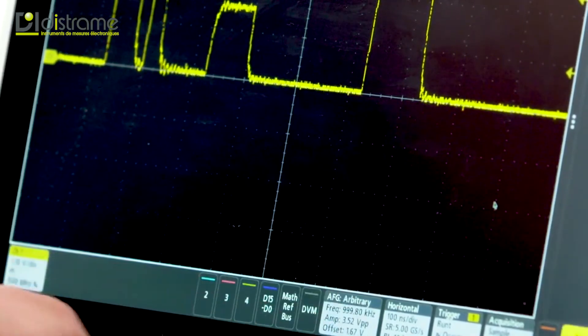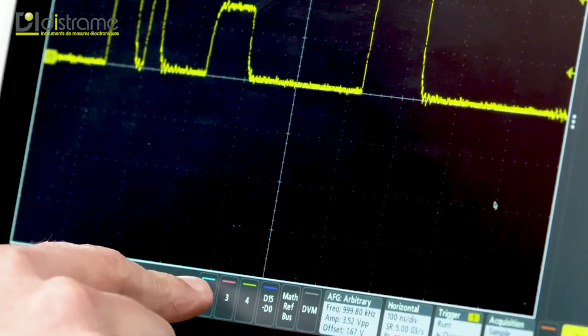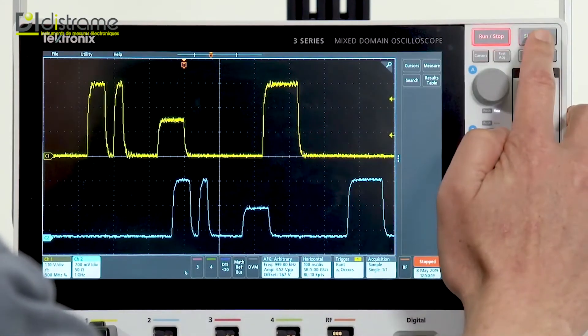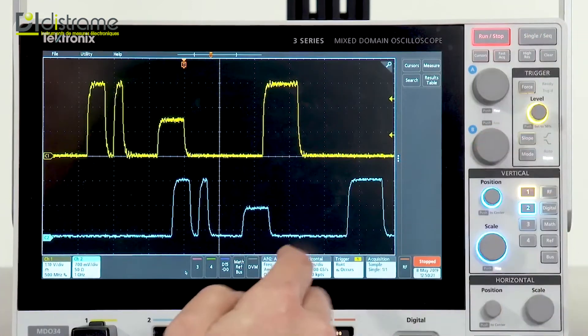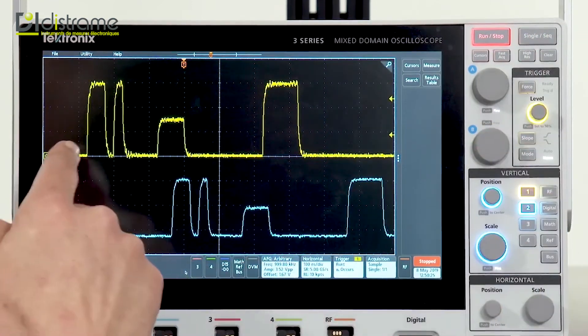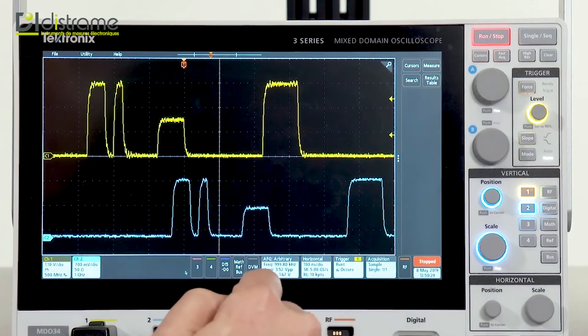And if you'll recall, I said that we were bringing the AFG output into channel 2, so I will turn on channel 2, and we will do a single acquisition here. You can see that we have faithfully recreated the input from channel 1, playing out the AFG, and captured on channel 2.